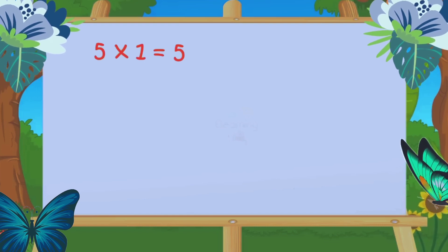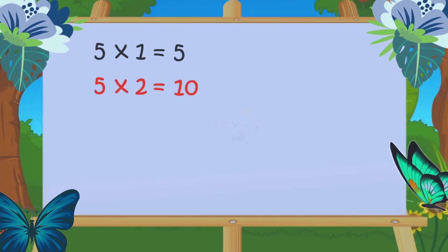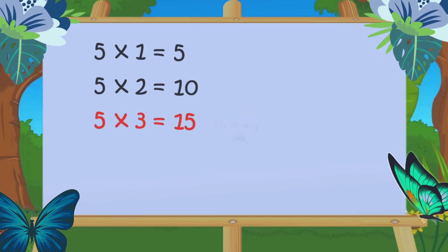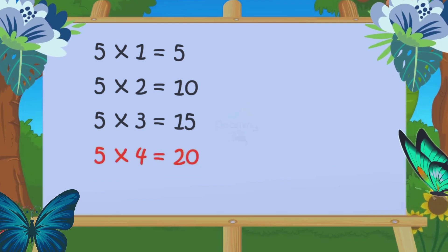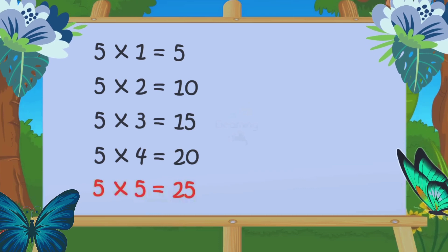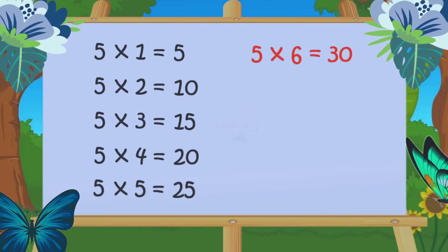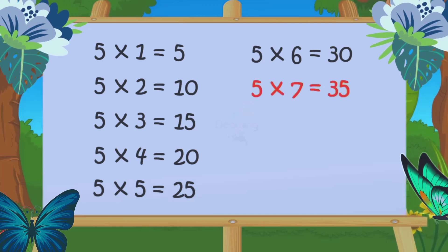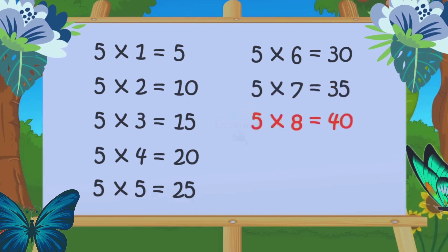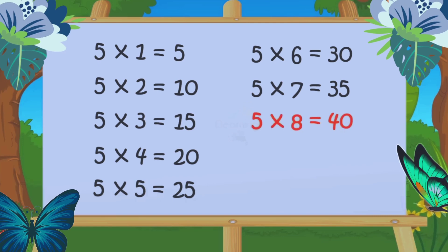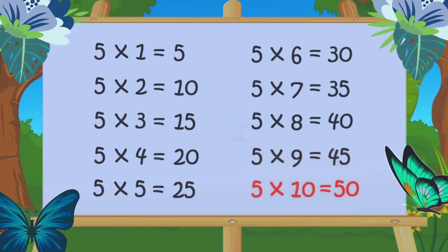5 1s are 5, 5 2s are 10, 5 3s are 15, 5 4s are 20, 5 5s are 25, 5 6s are 30, 5 7s are 35, 5 8s are 40, 5 9s are 45, 5 10s are 50.